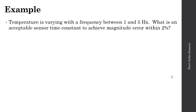Let's work through an example. Consider a temperature that is varying with a frequency between 1 and 5 Hz. The question is: what is an acceptable time constant for a temperature sensor such that we can measure the temperature within an error of 2%? This magnitude error tells us that we need a magnitude ratio between 0.98 and 1.02.